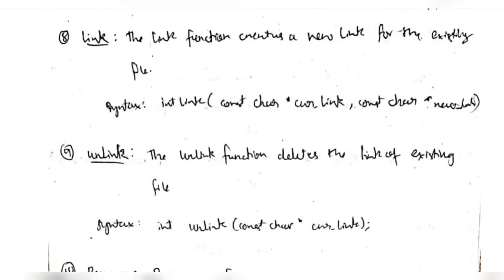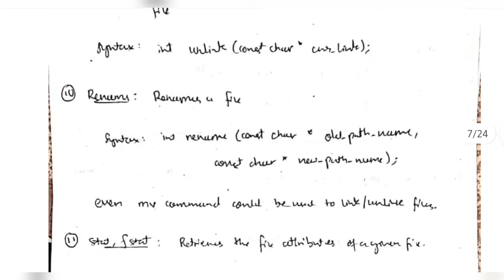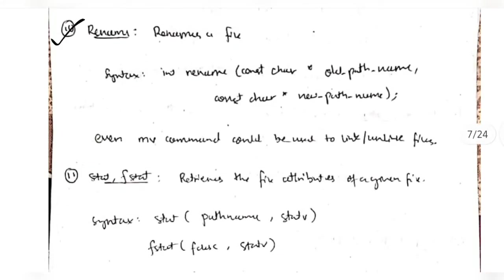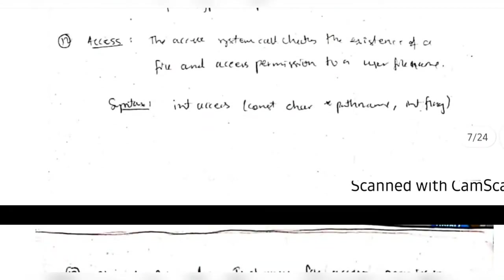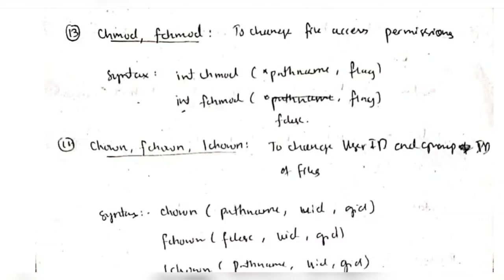Next we have 'link' and 'unlink' which links and unlinks a file, 'rename' which renames the file, 'stat' which gives the status of the file, and 'access' which lets us access the file if there is permission. If we have to change file access permissions we can use 'chmod' or 'fchmod' - there is a slight difference: one takes the path name and the other takes the file descriptor.